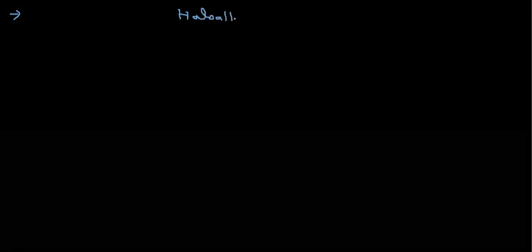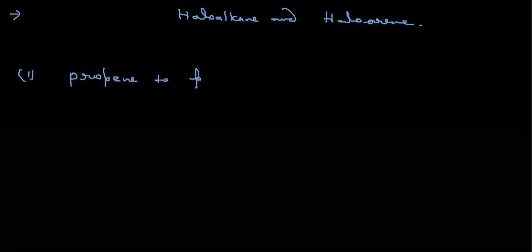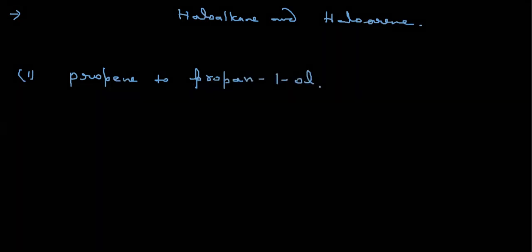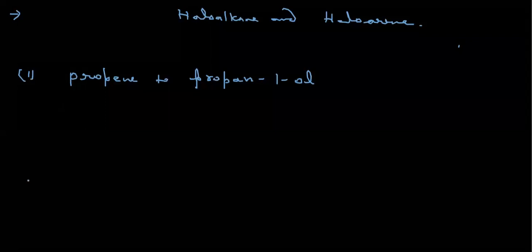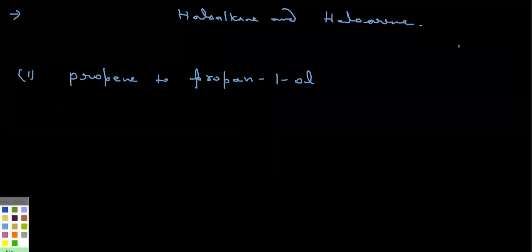Today we are taking some conversions from haloalkane and haloarene. The first conversion: suppose we have to convert propane to propan-1-ol. So how can we do this? In this conversion we can do anti-Markovnikov first.